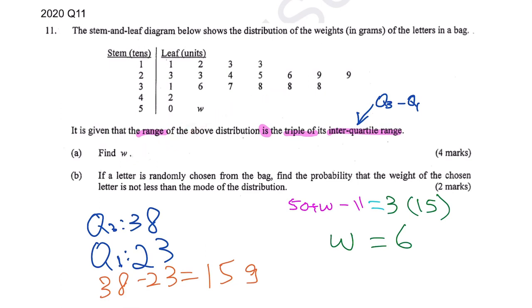Now part b. We already know w is 6. It's asking you to find the probability that the weight of the chosen letter is not less—so it could be more or equal—than the mode. Mode means the number that came the most, which is 38. See, three times. So 38 is your mode. Find the probability that your letter is not less than 38 of the distribution.